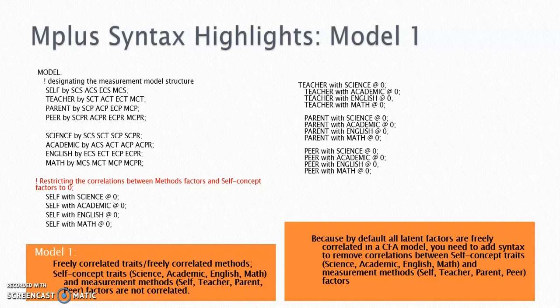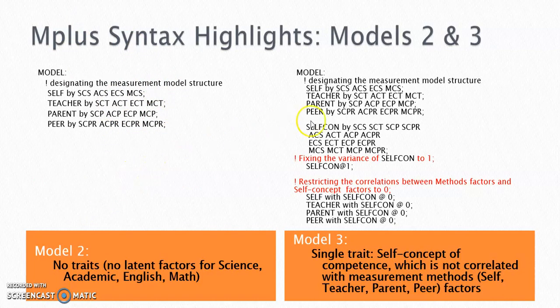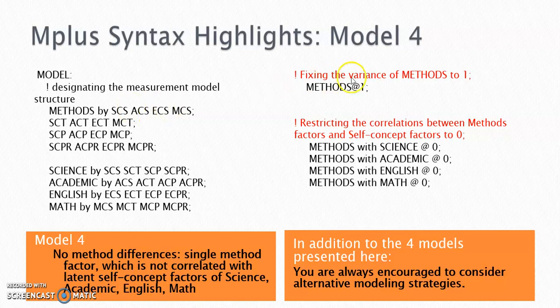I ran the four models in M+, and included the structure of the models on the slides. In model one, you need to remember to set the correlations between the four trait factors and the four method factors to zero, because by default in M+, all latent factors are freely correlated in a CFA model. But in our example, there are no correlations between the two groups of factors. In model three, the single trait factor is not correlated with the four method factors, and you need to add syntax to set their correlation to zero. In model four, the single method factor is not correlated with the four trait factors, and you also need to add syntax lines to set their correlation to zero.